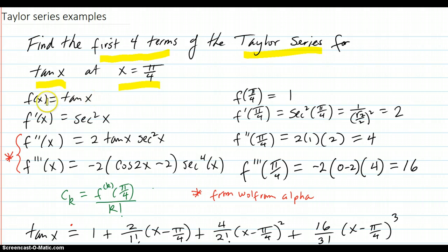So you do your derivatives here. The function is tangent x. Derivative is secant squared. Second derivative is this. Third derivative is this. And I've got these last two from Wolfram Alpha. No need to sit there killing yourself over this because that's not the point of it.